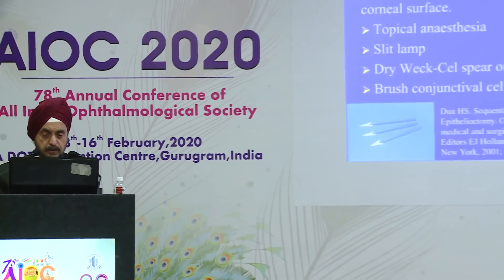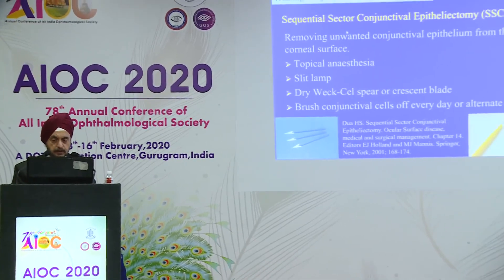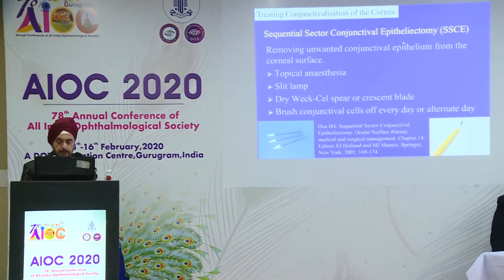What happens when you get an epithelial defect where the limbus is involved? Sometimes the conjunctiva grows onto it and you get conjunctivalization and signs of stem cell deficiency, which we want to avoid. So if that conjunctiva is threatening to grow or has grown, you remove it, and because you have to remove it sequentially every day or every other day, it's called sequential sector conjunctival epitheliectomy.